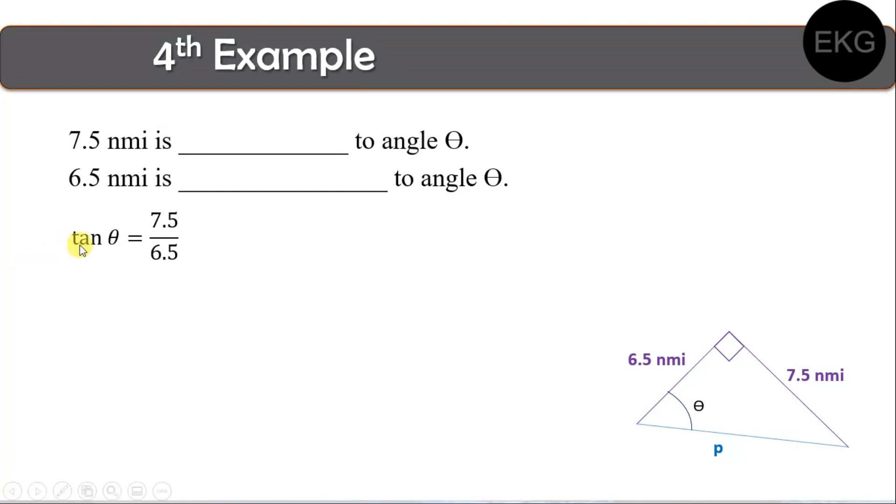So, I leave you to answer that. But here, sabi natin, gagamitan natin siya ng tangent. So, kayo ng bahala. Mag-addersend, papano naging 7.5 over 6.5 ito? Now, since na-establish natin ito, we take the inverse, trigonometric function on both sides, magkakancel yung tangent theta. At kung i-calculate natin ito sa calculator, we will arrive on the answer that theta is actually equal to 49.09 degrees.